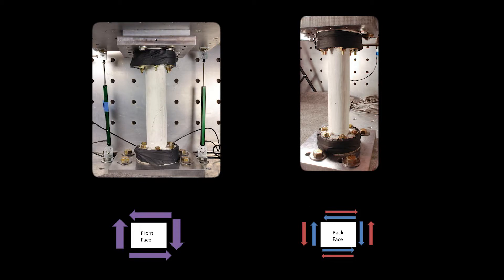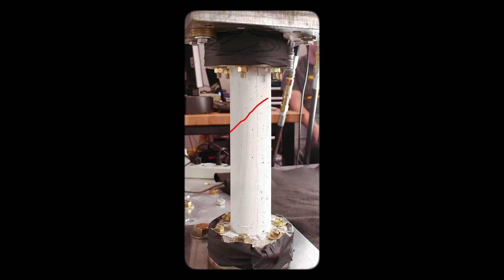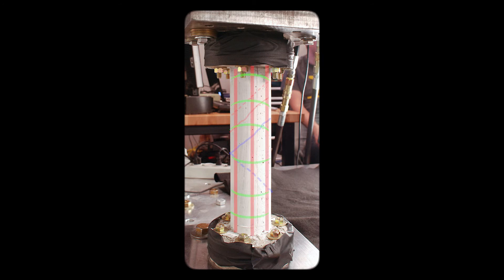Cracks will initially travel diagonally along that face. The nature of their propagation will depend primarily on two factors: the type of behavior — shear or torsion — which controls the individual test case, and the reinforcement provided.